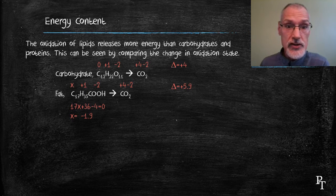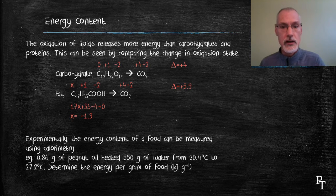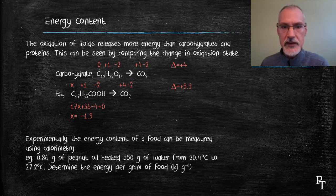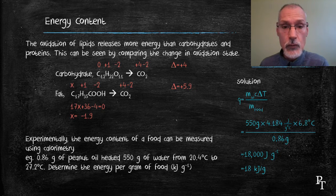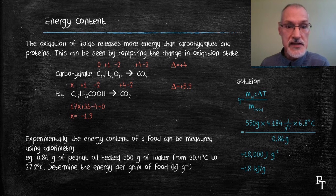We can also measure the release of energy using calorimetry and burning the food. For instance, if I take a peanut and burn the oil in it, it can be used to heat water. Measuring the temperature change of that water, I should be able to determine the heat content of that peanut. So let's go through the math — very similar to what was done in the enthalpy unit. I'm going to solve for the heat by looking at the quantity of heat absorbed by the water and dividing it by the mass of the peanut that burned. The quantity of heat absorbed by the water is the mass of the water, specific heat of water, and temperature change of that water — divided by the mass of the peanut that burned. That gives me the heat per gram.